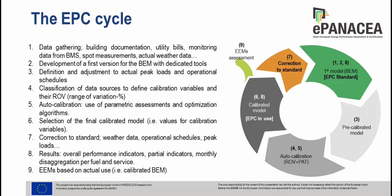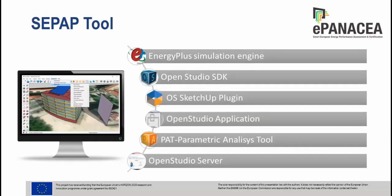To support the workflow, in addition to the web platform CEPAP — the Smart Energy Performance Assessment Platform — several additional tools have been developed to enable auto-calibration of the dynamic simulation model. The CEPAP tool is built on OpenStudio, a cross-platform collection of software tools supporting whole-building energy modeling using EnergyPlus as a simulation engine. It integrates OpenStudio, the SketchUp plugin, OpenStudio application, the PAT parametric analysis tool, and OpenStudio server.